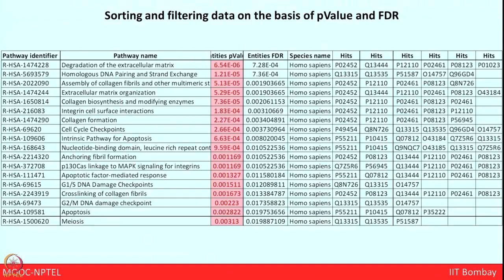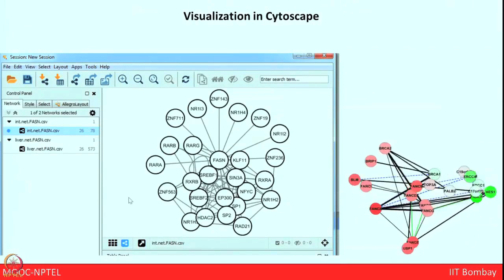After sorting and filtering data on the basis of p-value and FDR, I found some top pathways to take for the next part of the analysis. This table is taken from the result file — you can find the pathway identifier, which is the unique identifier ID of each pathway in Reactome, the pathway name, p-value, FDR, species name, and the hits — meaning what proteins from your sample data match each pathway. This data can be put into any protein-protein interaction module and from there we can take the CSV file or JSON file and put it directly into Cytoscape to check the visualization.